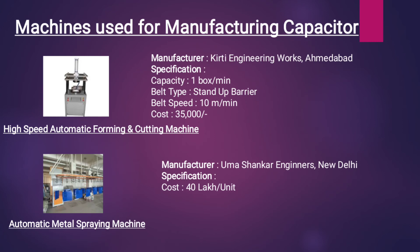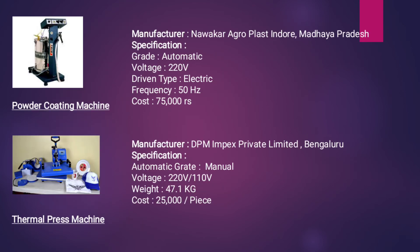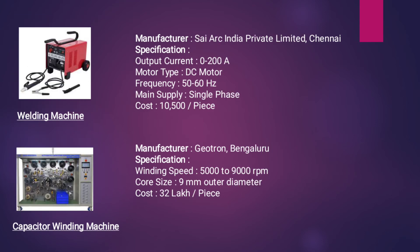Machines used for manufacturing capacitors: first is high-speed automatic forming and cutting machine; second is automatic metal spraying machine, with its ratings and specifications; third is powder coating machine; fourth is thermal press machine — the manufacturer of the powder coating machine is Nakar Agroplast, Indore, Madhya Pradesh; fifth is welding machine; and sixth is capacitor winding machine.